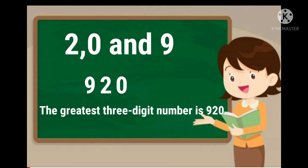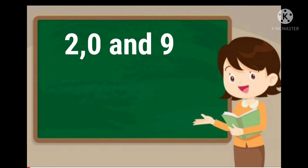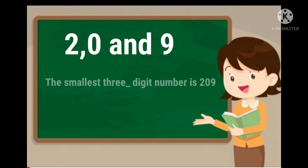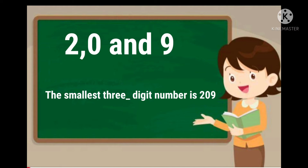Children, form the smallest three digit number using these digits 2, 0 and 9. Arrange the digits in ascending order. When we arrange the digits in ascending order, we get 0, 2, 9. But 0, 2, 9 is a two digit number and not a three digit number — it is 29. So, we interchange the position of 0 and 2 and form 209. Thus, the smallest three digit number that can be formed using the digits is 209.